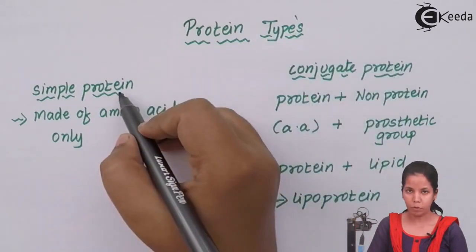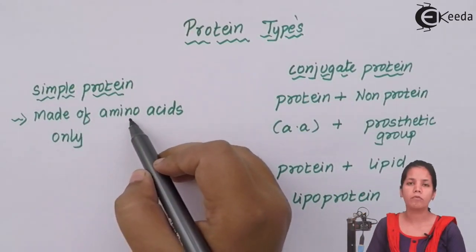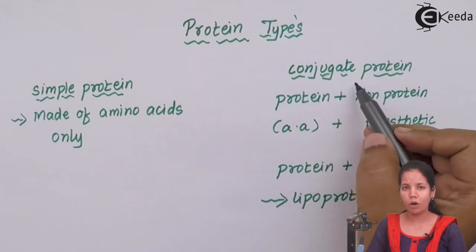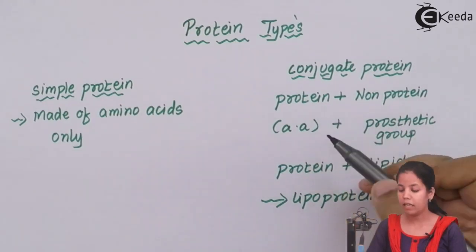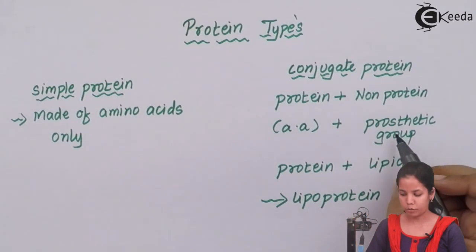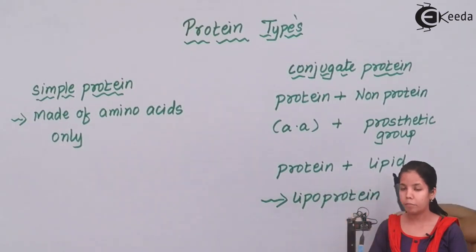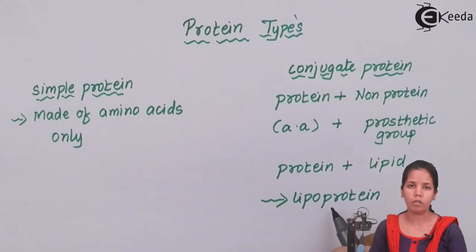To summarize: the two types of proteins are simple proteins and complex proteins. Simple proteins are made up of amino acids only — an example is histone proteins, on which DNA is wrapped. The next type is conjugate or complex proteins, made up of a protein part and a non-protein part. The protein part is amino acid and the non-protein part is the prosthetic group, or helping hand. Together, amino acid plus prosthetic group forms the complete protein. An example is proteins plus lipids forming lipoproteins, which help in signaling or in the entry and exit of biomolecules inside cells.